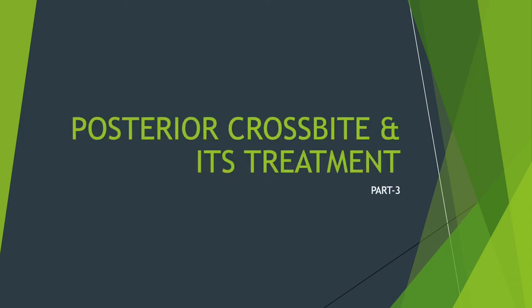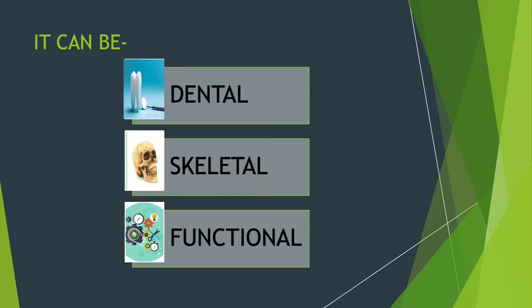After discussing anterior crossbite, we will be discussing posterior crossbite and its treatment. This is part three of our crossbite series. Posterior crossbite can be of three types: dental, skeletal, and functional. If the cause is just tooth-related — meaning there is a problem in the position of eruption of the tooth — then it is completely dental, meaning the tooth has erupted in an abnormal position.